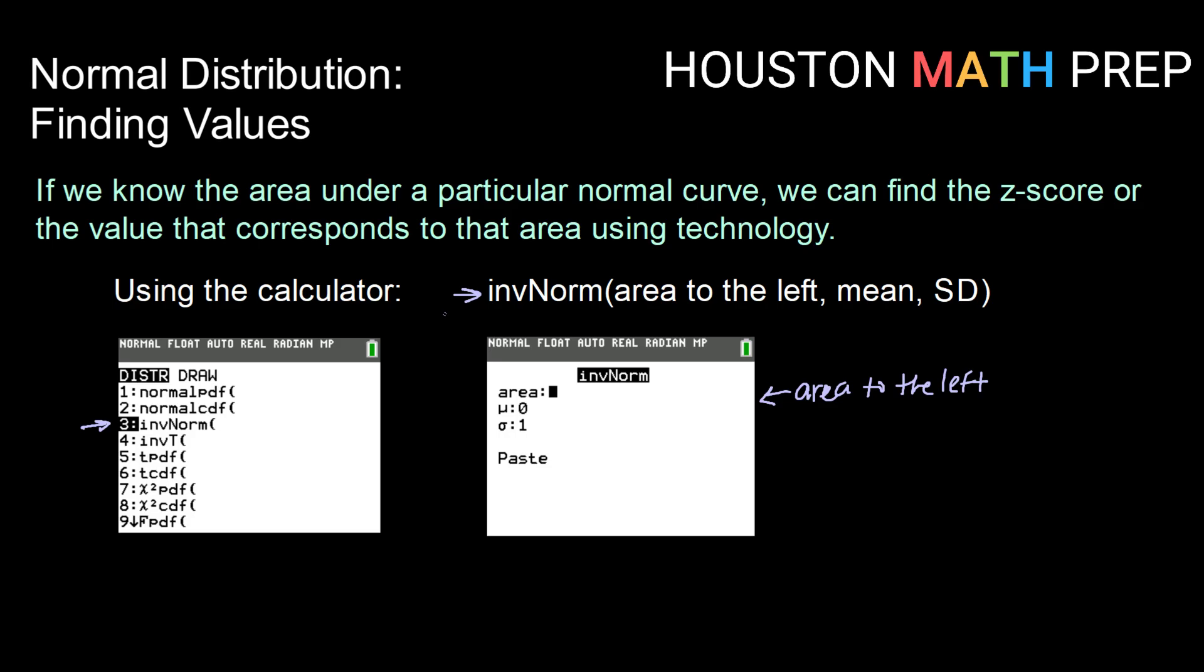If you have an older operating system, then this particular menu won't come up. It will just bring up inverse norm with an open parenthesis onto your screen. And so you'll just type in your area to the left, your mean, your standard deviation, all separated by commas.